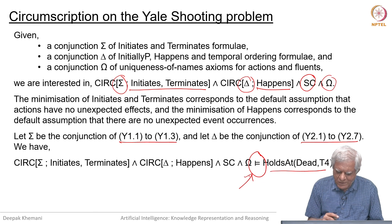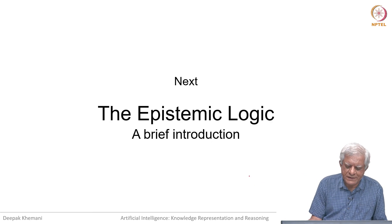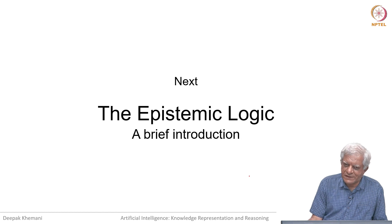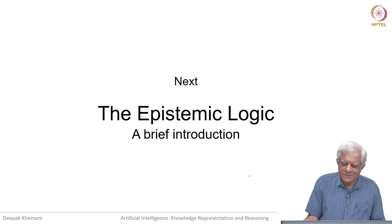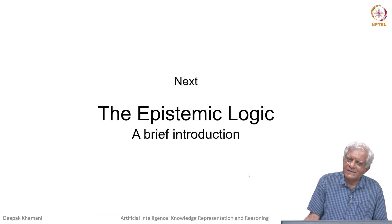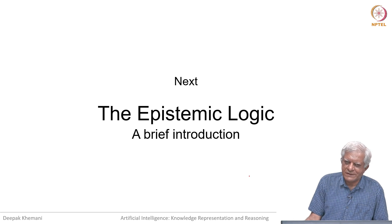We will stop here. We wanted to get introduced to the idea that event calculus goes beyond first order logic, because first order logic can only take objects in the domain as arguments, whereas event calculus can take formulae of first order logic or actions as arguments, relate actions to events, and talk about change and time. In the next session we will look at the last topic in our course, which is epistemic logic — which talks about agents knowing what other agents know.